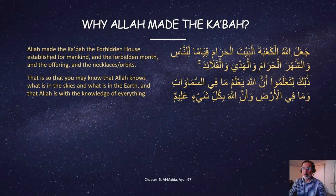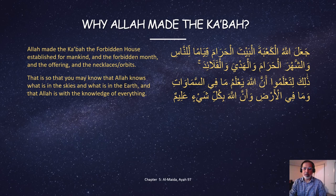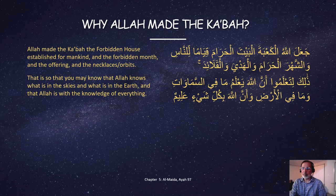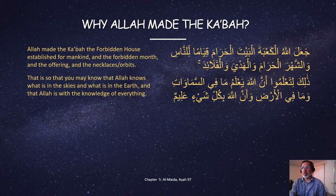Why Allah made the Kaaba: The top portion of the ayah explains who made the Kaaba and for whom it was made, and the bottom portion explains why he made it. Chapter 5, Al-Ma'idah 97. So who made the Ka'bah? Allah made the Ka'bah, the forbidden house. And for whom was it made? Established for all the people, mankind — not just for the Muslims. But when we visit someone's house, we abide by their rules. It's a polite thing to do.